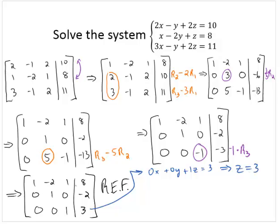And in fact, looking at the second row, I can also see that 0x plus 1y plus 0z is negative 2. Which implies that y is negative 2.